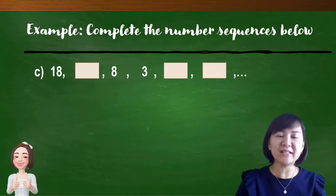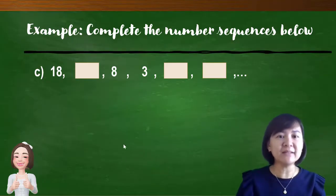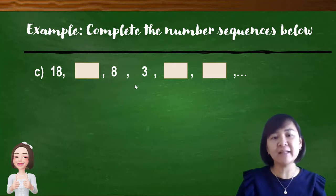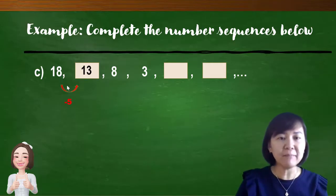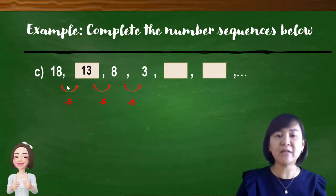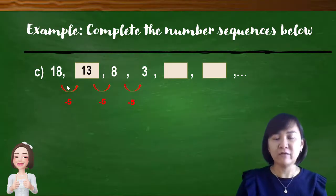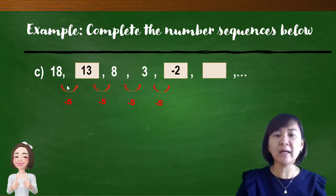Question 3: we need to complete the number sequence. We check the pattern. Looking at 8 and 3, we notice the pattern is minus 5. Testing: 18 minus 5 gives 13. Then 13 minus 5 gives 8 — correct! And 8 minus 5 gives 3 — confirmed. The pattern is minus 5. So continuing: 3 minus 5 is negative 2, and negative 2 minus 5 is negative 7. The number sequence is now complete.